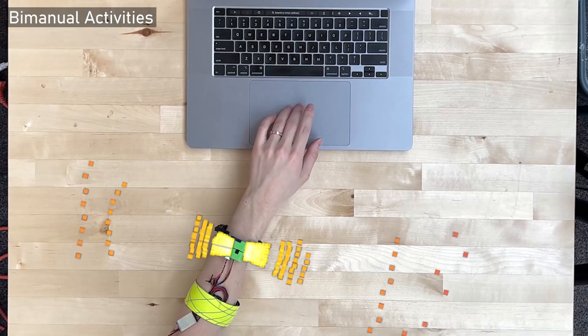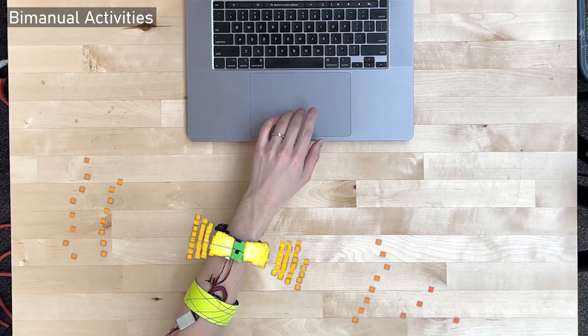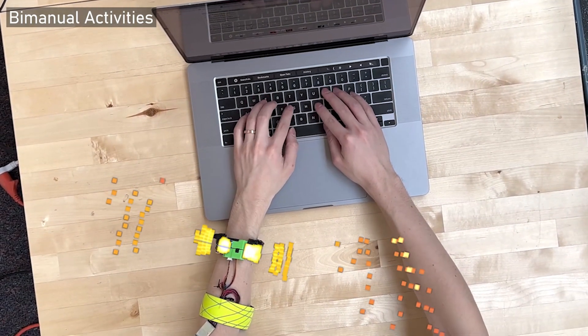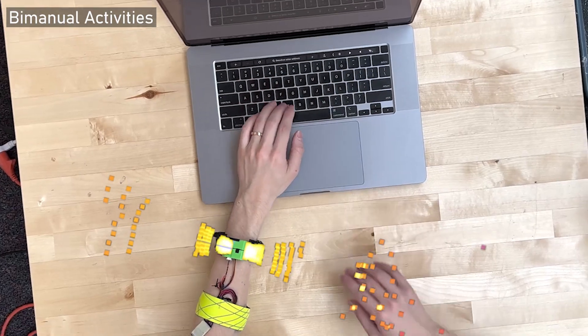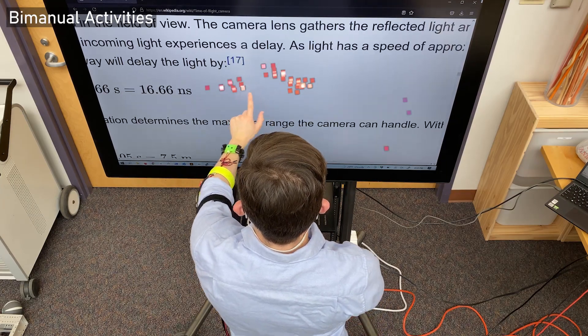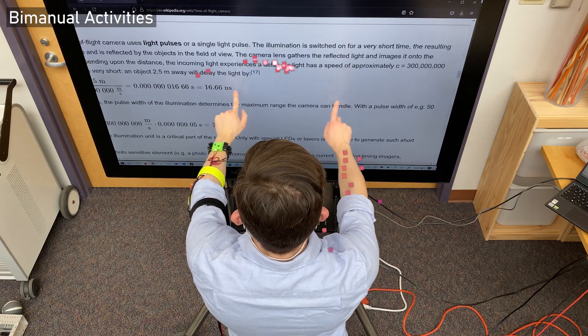We also created basic implementations for four other potential use cases. First, we found that DiscoBand is sometimes able to image the other arm, opening up the possibility of bimanual activity tracking, even though one arm is entirely uninstrumented.